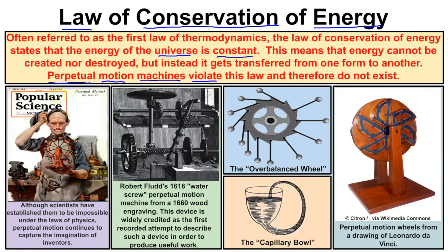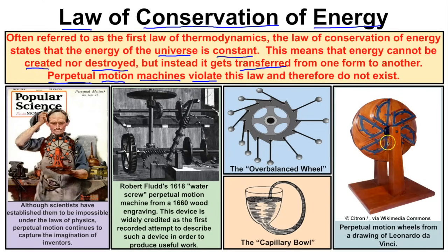Looking at this magazine from the early 1900s, we can see that scientists were attempting to develop perpetual motion machines, which are in contradiction and violation of the law of conservation of energy. You cannot create energy and you cannot destroy energy — energy is just transferred from one form to another. Examples like the overbalanced wheel, the capillary bowl, and Leonardo da Vinci's perpetual motion wheel are all impossible.